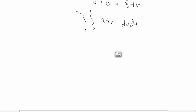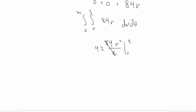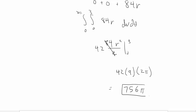Integrating 84r with respect to r first gives 84 · r²/2 = 42r². Evaluating from 0 to 3: 3² = 9, so that's 42 × 9 = 378. Since there's no theta variable, the theta integral just multiplies by 2π, giving 378 × 2π = 756π. That's the final answer.